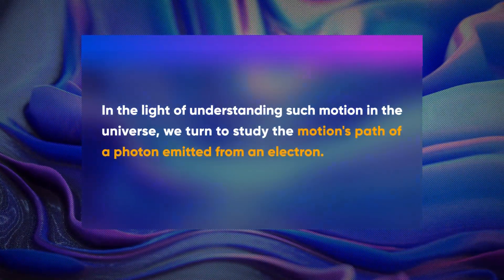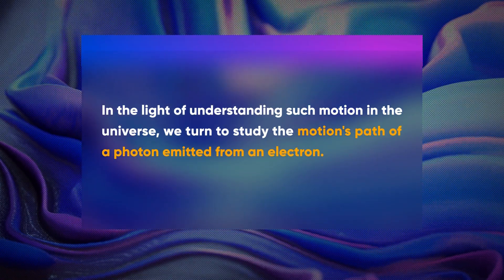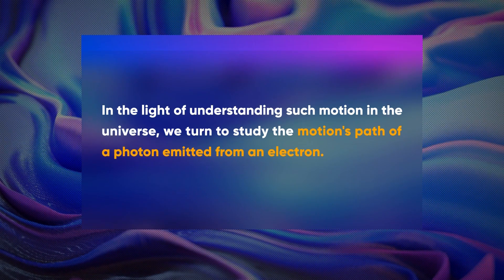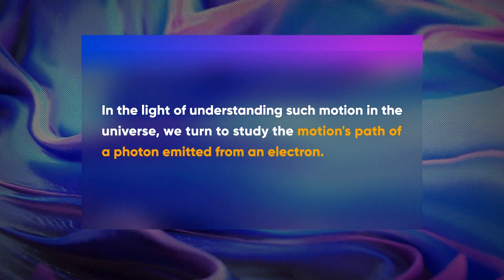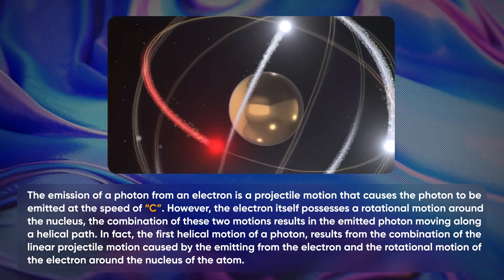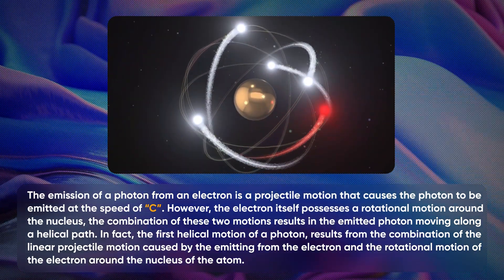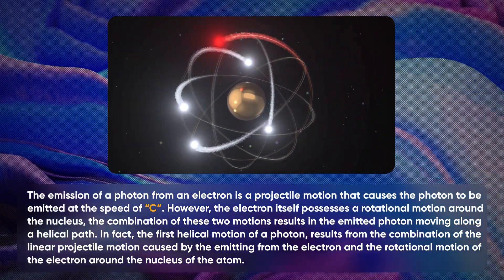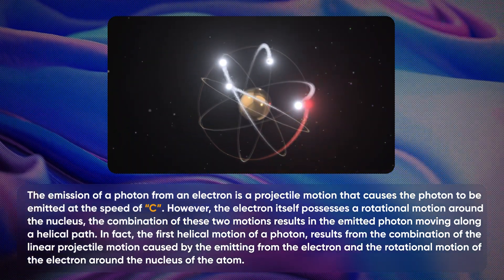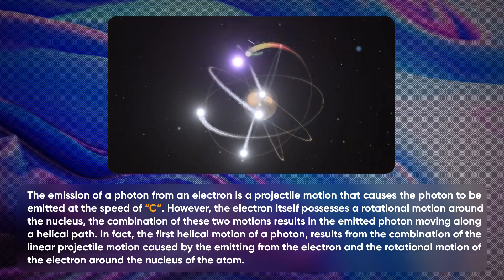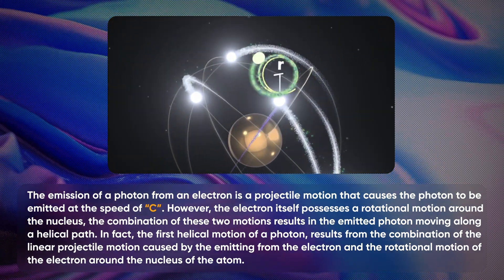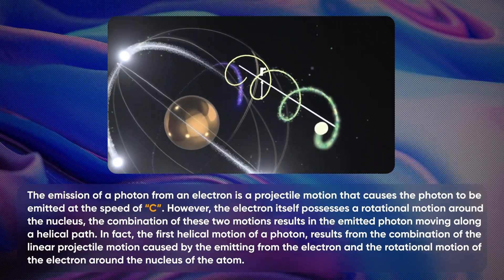In the light of understanding such motion in the universe, we turn to study the motion path of a photon emitted from an electron. The emission of a photon from an electron is a projectile motion that causes the photon to be emitted at the speed of c. However, the electron itself possesses a rotational motion around the nucleus. The combination of these two motions results in the emitted photon moving along a helical path.